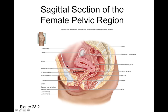Just posterior to the pubic symphysis are the pelvic organs. In the pelvic cavity, we find the urinary bladder, uterus, and rectum. Associated with the urinary bladder is the urethra, extending down to the external urethral orifice. The uterus is associated with the vaginal canal, which opens at the vaginal orifice, and is also associated with the fallopian tube and ovary, which are suspended by suspensory ligaments — including the broad ligament and the ovarian ligament, which holds the ovary to the uterus.